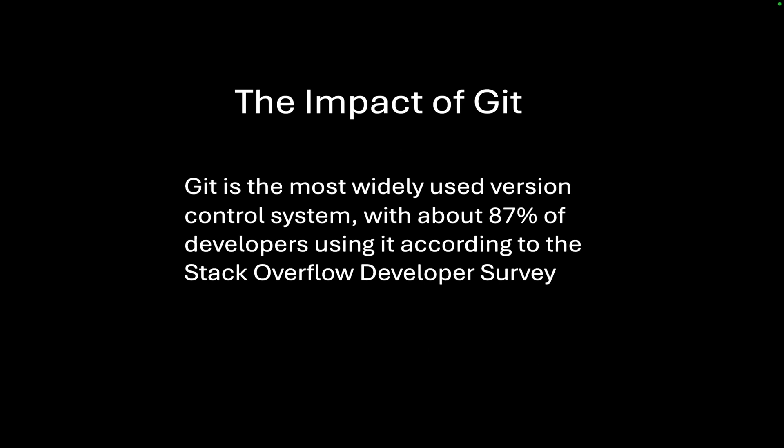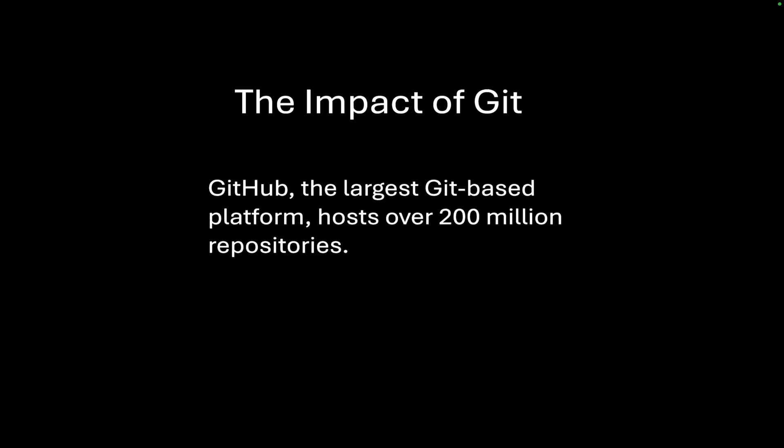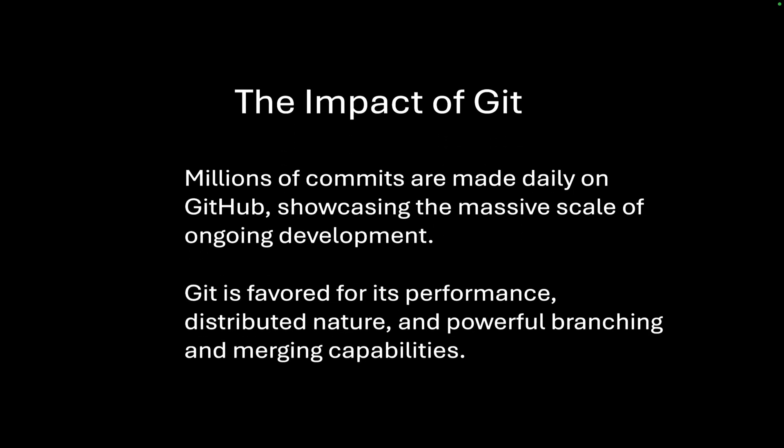Today the impact of Git is tremendous. It allowed developers to work offline, manage repositories, and merge changes efficiently. The community quickly adopted it, and today around 87% of developers are using it as their version control system according to the Stack Overflow Developer Survey. GitHub, the largest Git-based platform, hosts over 200 million repositories. Git has changed the landscape of software development forever, favored for its performance, distributed nature, and powerful branching and merging capabilities.